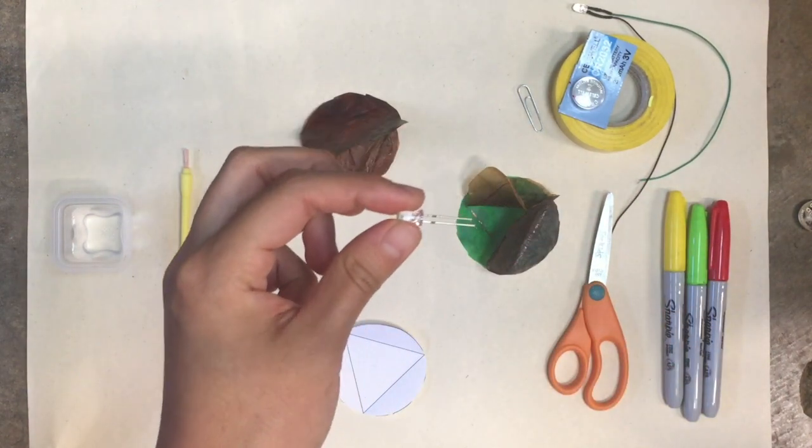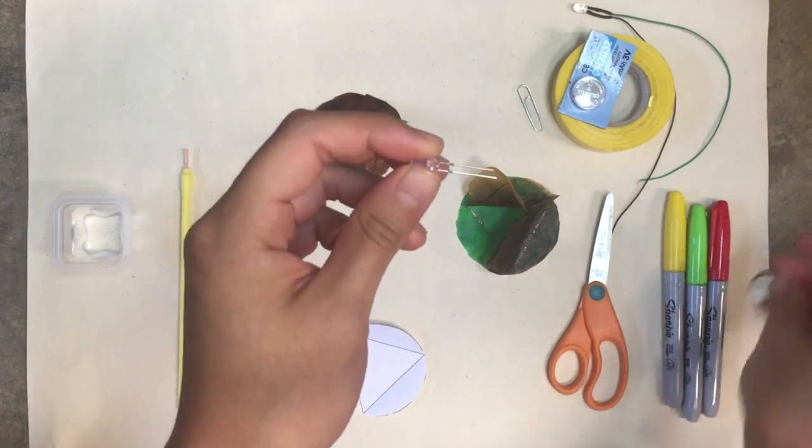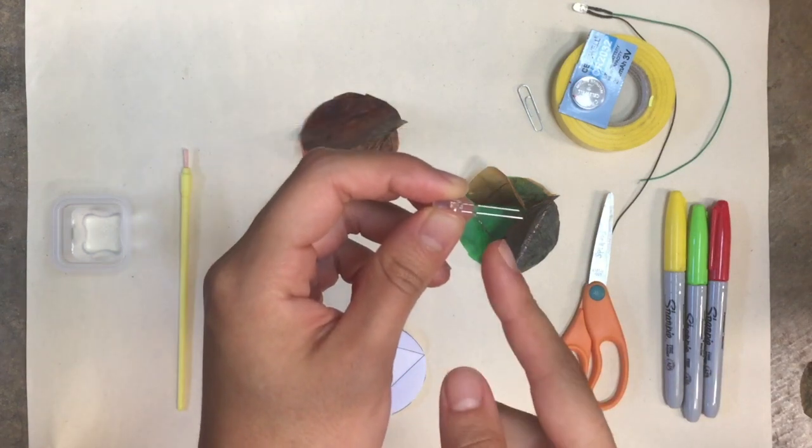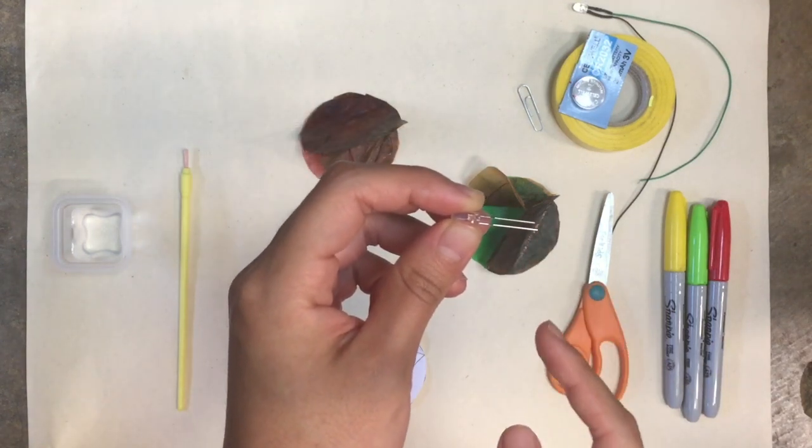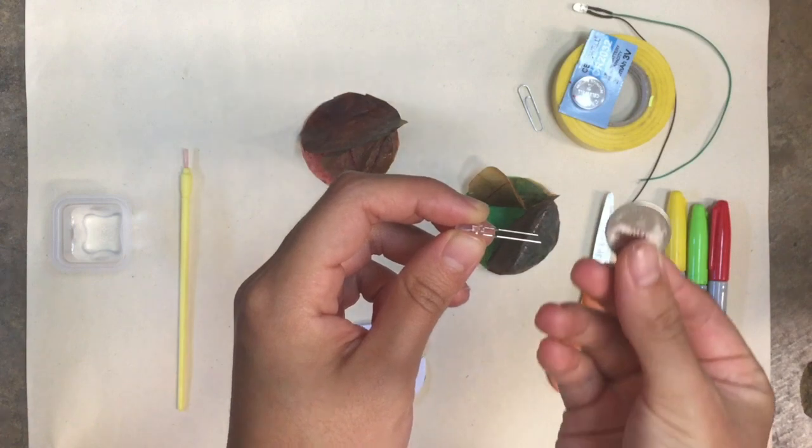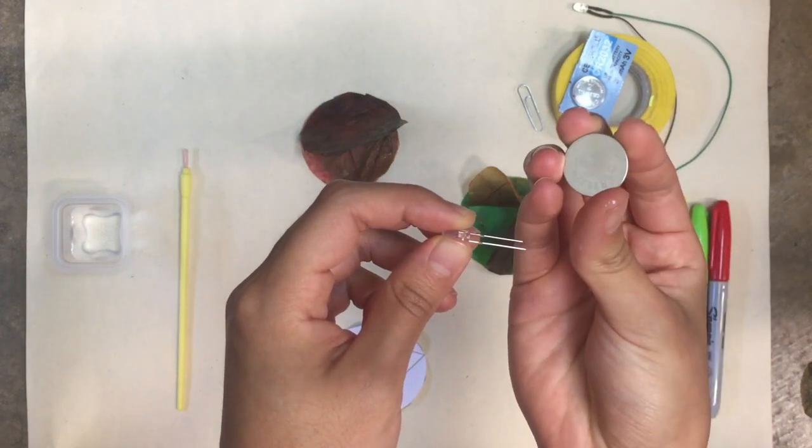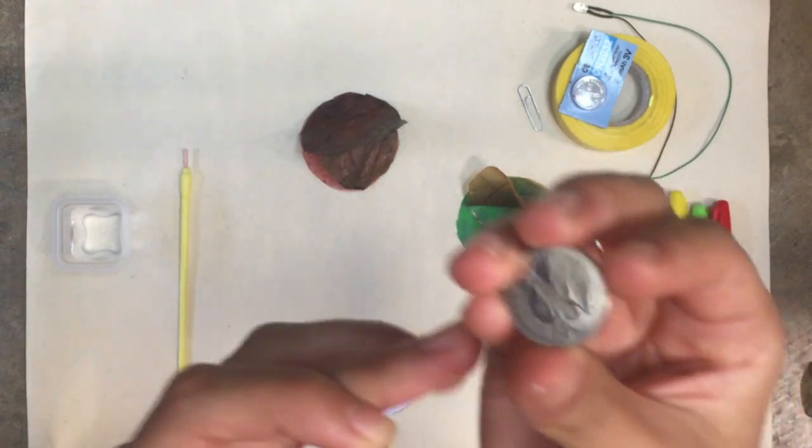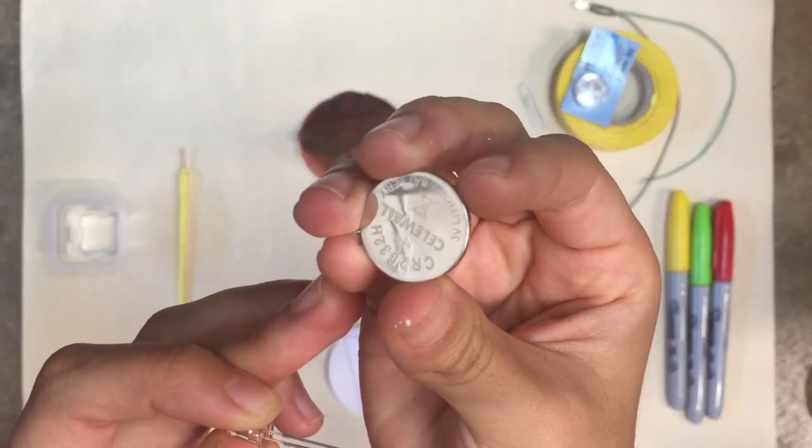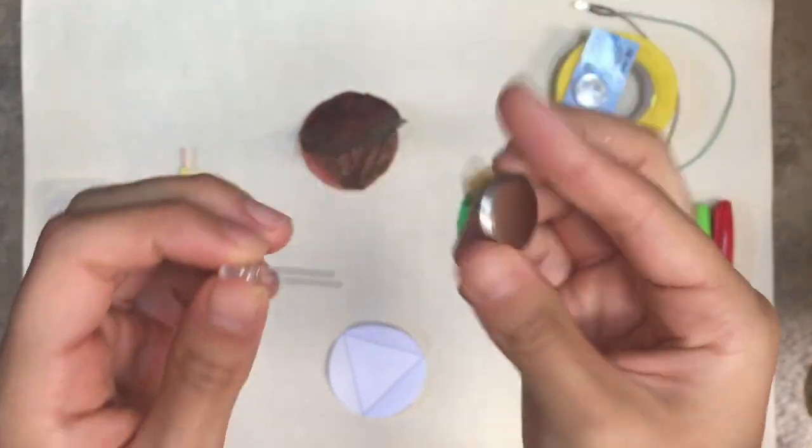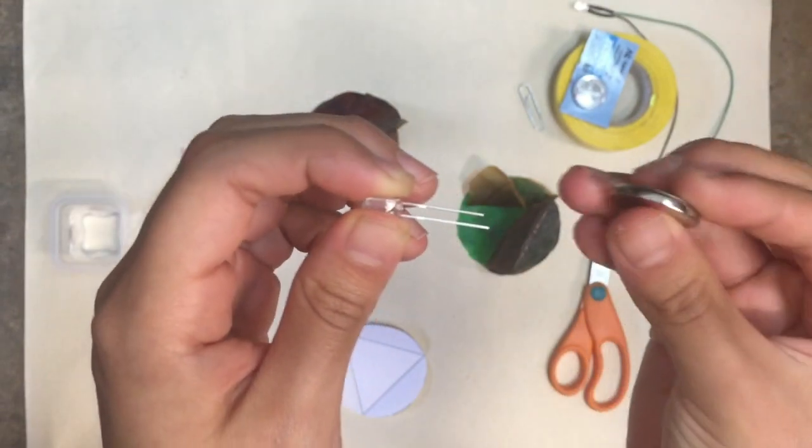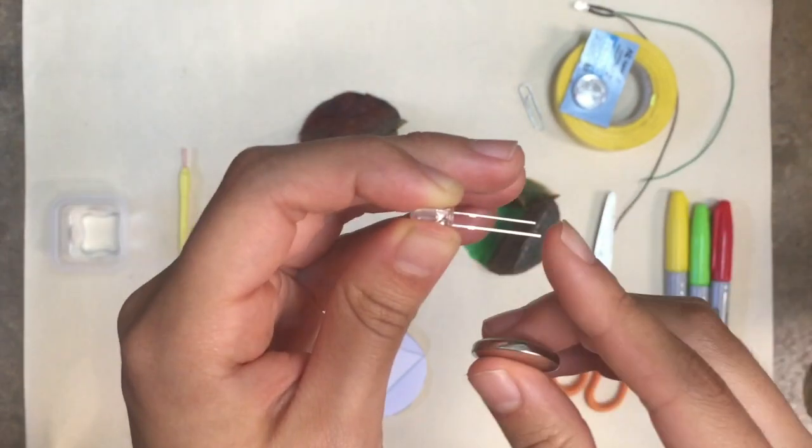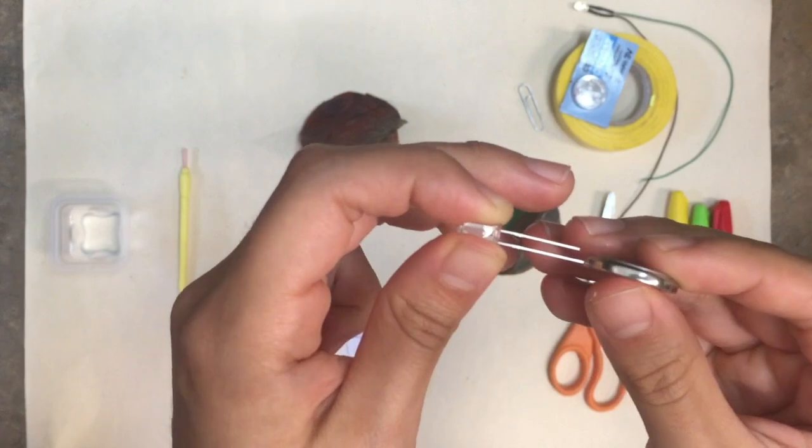So right now we can set up the light, and one option is to use a normal LED and a coin cell battery. Normal LEDs have two legs, the longer one is positive and the shorter one is negative. Batteries also have charge sides, and you can tell just by looking at your coin cell battery one side should have a little plus on it which is the positive side and the other side is your negative side. You're going to sandwich the battery between the legs so that the positive leg touches the positive side of battery and the negative leg touches the negative side.